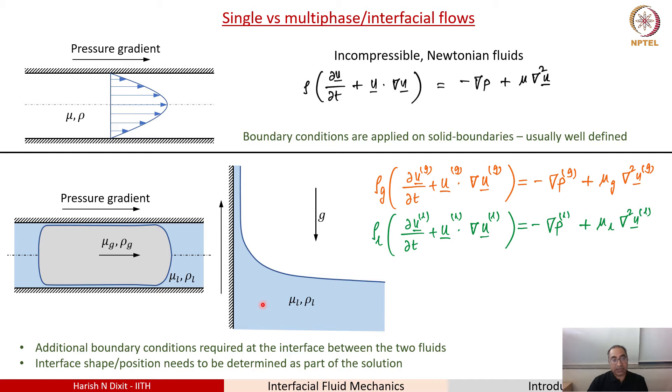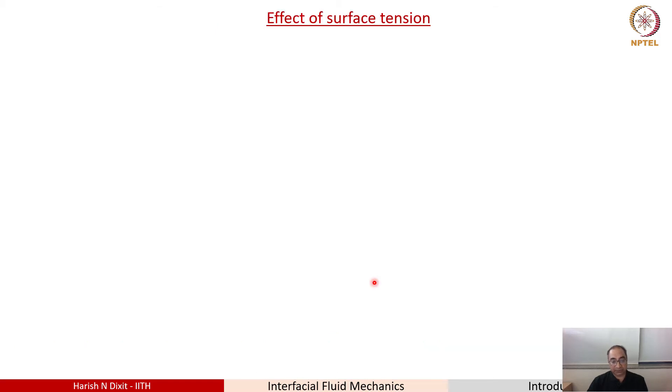Now in these problems, unlike the single phase problems, the boundary conditions at the interface have to be derived, and more importantly the shape of the boundary needs to be determined as part of the solution. That's the fundamental complexity that you would see in interfacial flows.